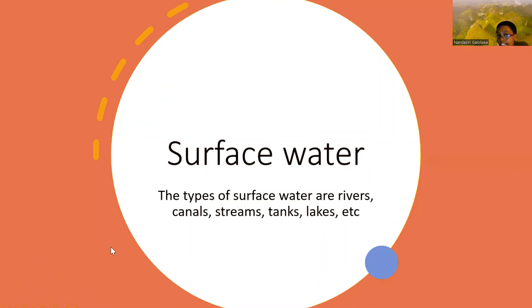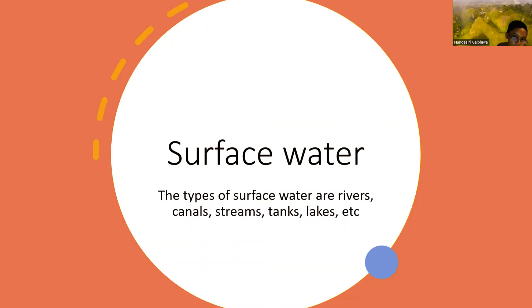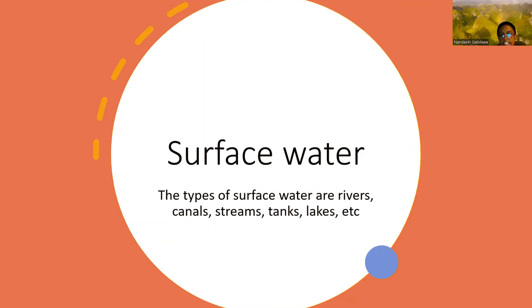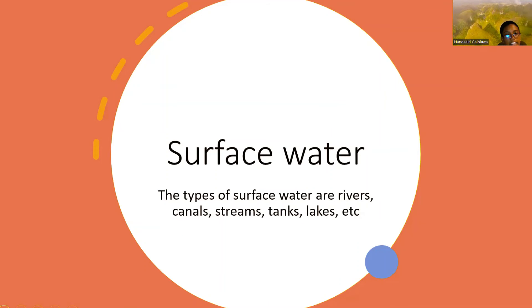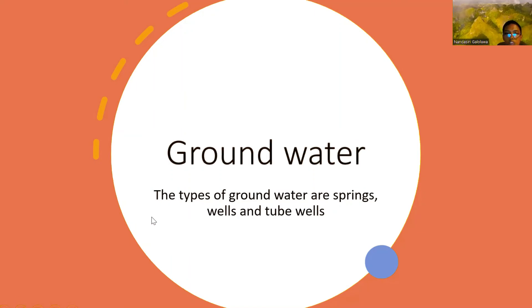Surface water includes rivers, canals, streams, tanks, and lakes. The types of ground water are springs, wells, and tube wells.